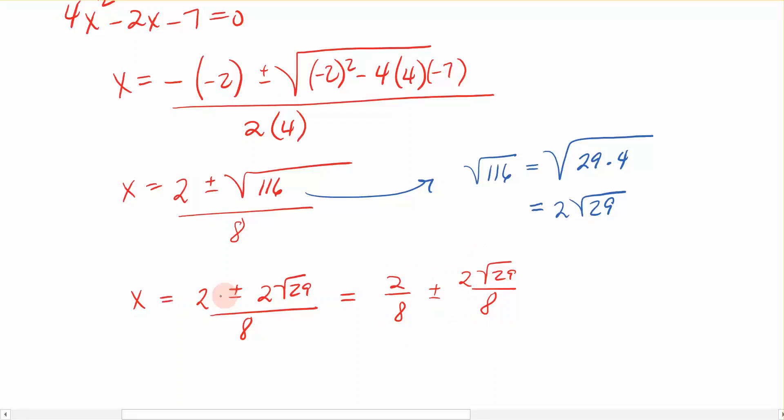So when you take this fraction and separate it, you're just really separating the numerator. But what it does is it lets me see that I can reduce this first fraction, because 2 divides into both the numerator and the denominator, and that's going to give me 1 fourth. And I can do the same thing with the second real numbers here. I've got a 2 and an 8. They reduce to be a 1, so that's just the square root of 29 over 4.